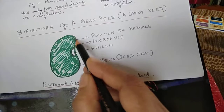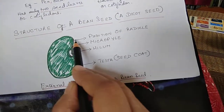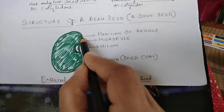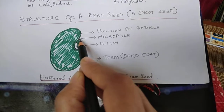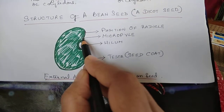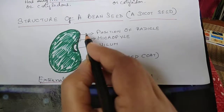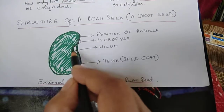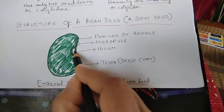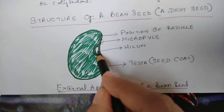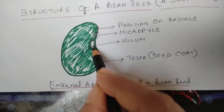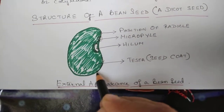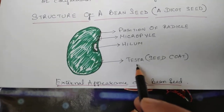Considering the external appearance of a bean seed, we can see the position of the radicle. There is a micropyle through which water enters the seed. There is the hilum — the white portion where the seed is attached to the ovary wall. The main part is covered by a seed coat called the testa.